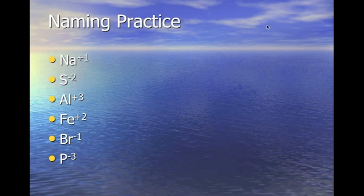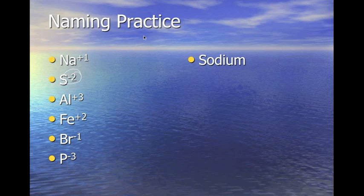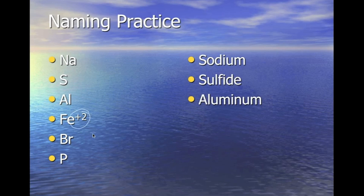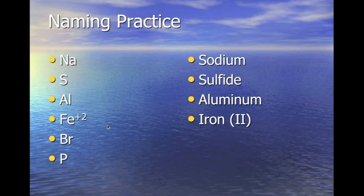Let's practice. Sodium is a metal with a plus 1 oxidation number — just sodium. Sulfur has a negative 2 oxidation number, making it a non-metal, so we add -ide: sulfide. Aluminum is a metal but not D-block, so just aluminum. Iron is a D-block metal with a plus 2 oxidation number — iron(II). Bromine is a non-metal, so bromide. Phosphorus is a non-metal, so phosphide.